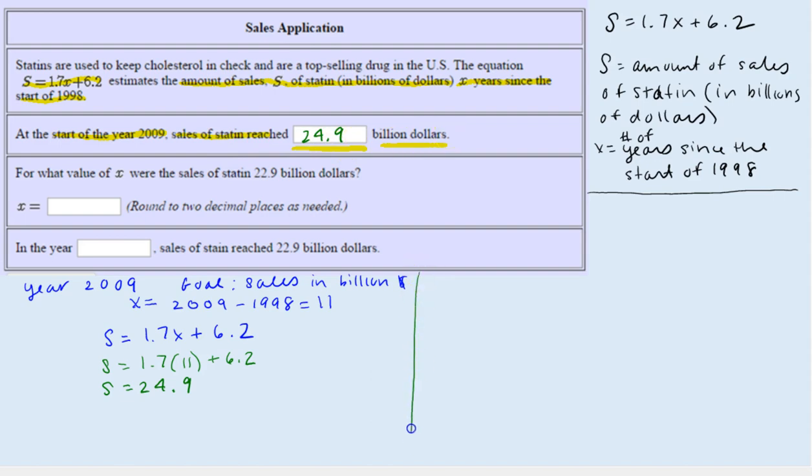Let's look at the next part. For what value of X were the sales of statin $22.9 billion? So they're asking us for the value of X, so that's what we're going to have to find.